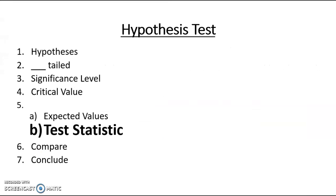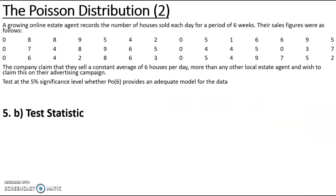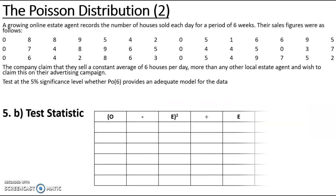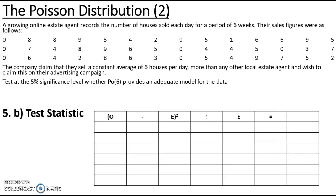Now I can work out my test statistic using the formula (O − E)² / E. Remember I have combined the first four categories together, so I need to count how many zeros, ones, twos, and threes there are altogether, which is 13. Minus my expected value of just under 6 — so I was only expecting 6 but had 13, giving quite a big contribution to the test statistic.